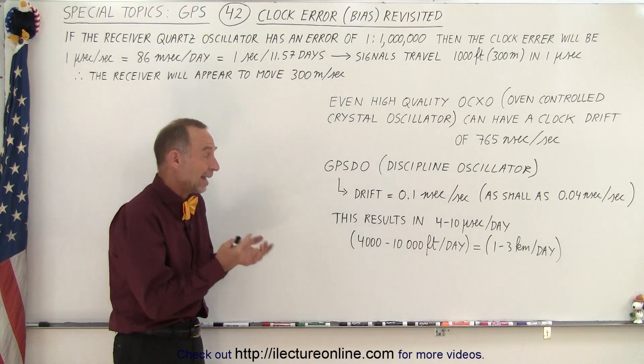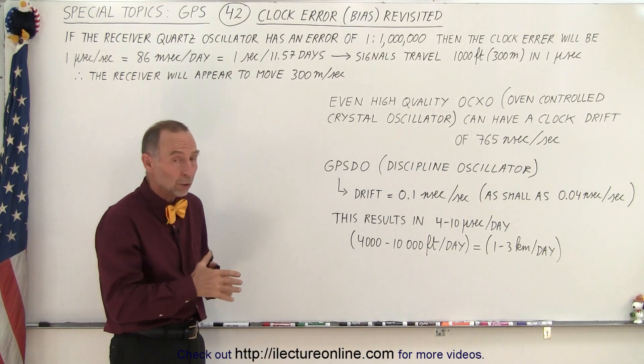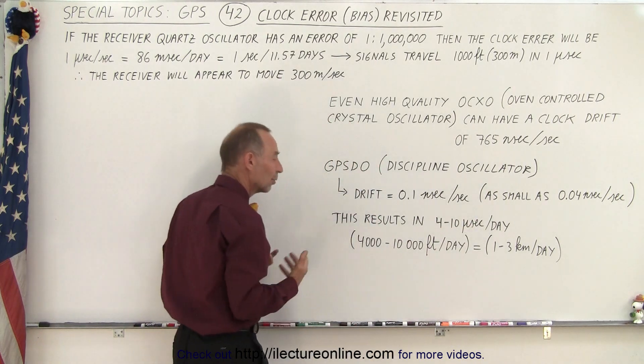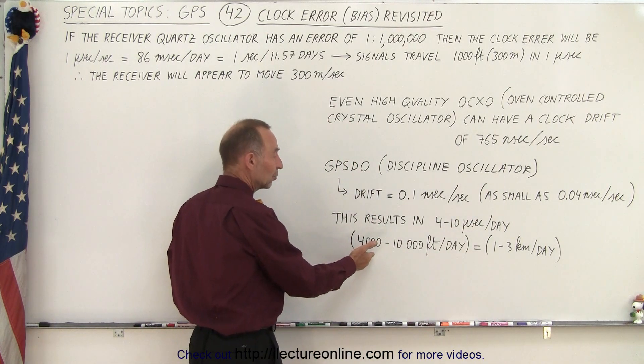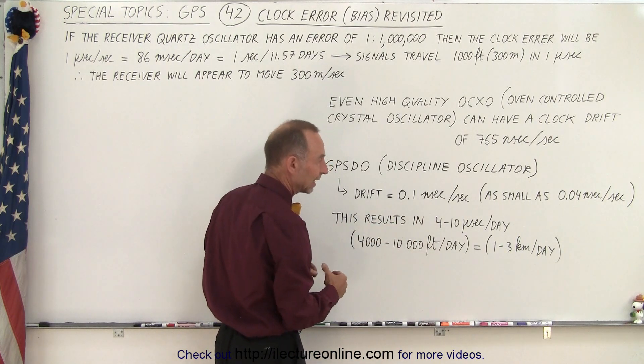Now, you might say, a tenth of a nanosecond every second is so small. Well, over the period of a day, that adds up to anywhere from 4 to 10 microseconds per day, which means that's anywhere from 4,000 to 10,000 feet per day that you'll be drifting from your true position if you don't compensate for it.